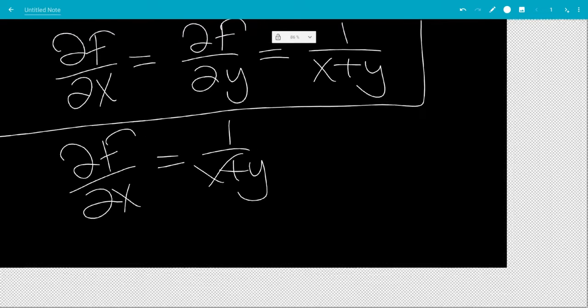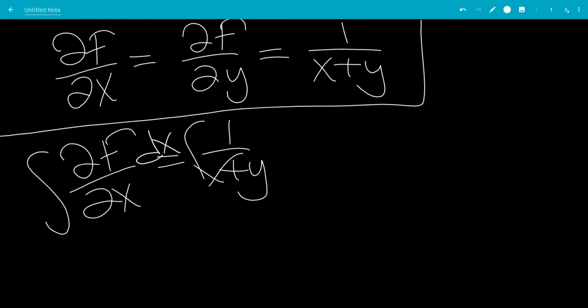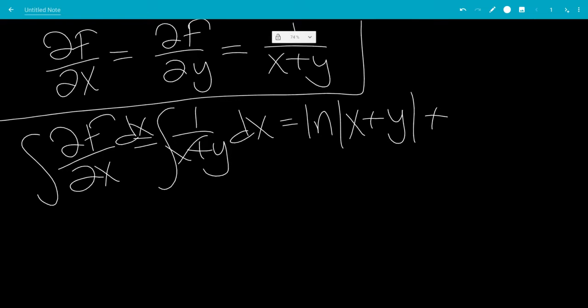So now we want to integrate both sides with respect to that variable. This will be natural log absolute value of x plus y, plus a constant of the other variable, which is g of y.